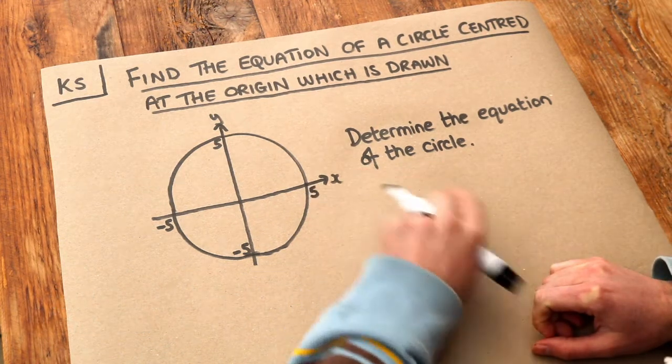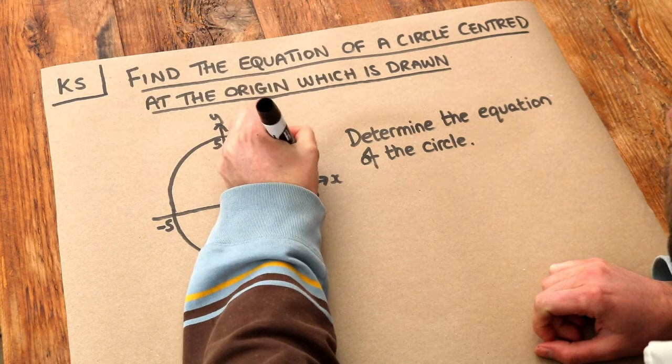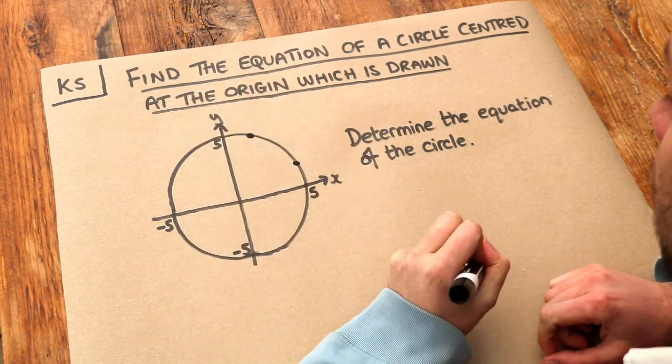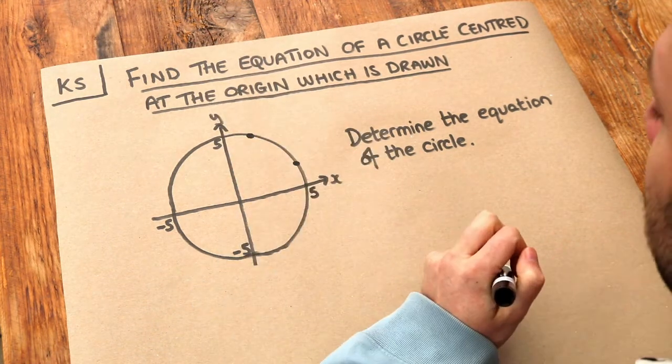We want to determine the equation of this circle, and that means finding an equation which will be true of any point that we choose on the circle that relates the x and y coordinate for any point on that circle.